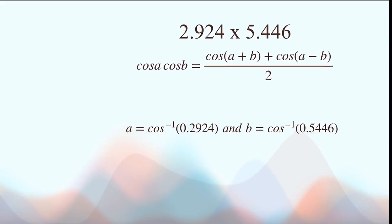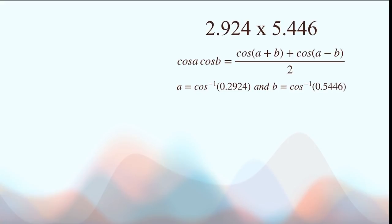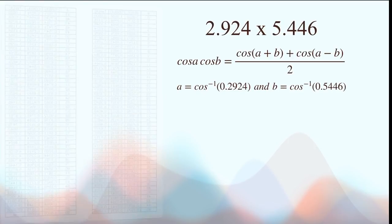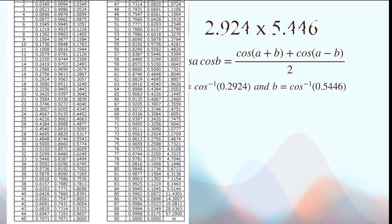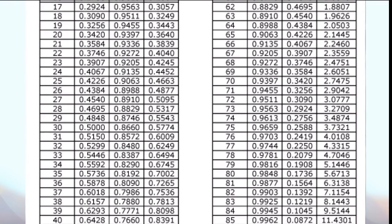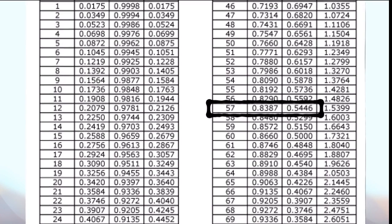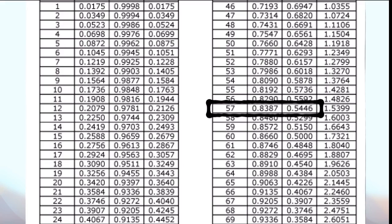Now we turn to the trigonometric table to find these angles. So note here that the first column shows the values for the angles, and the third column shows the cosine of that angle. So here we want 0.2924, which turns out to correspond to the angle 73 degrees. And for the other value, it turns out to be 57 degrees.